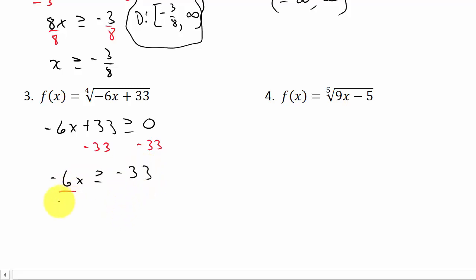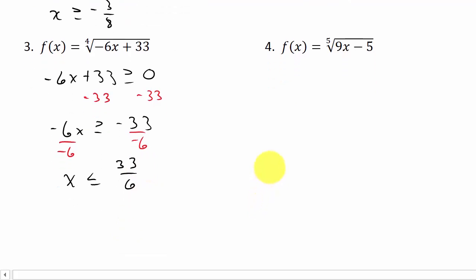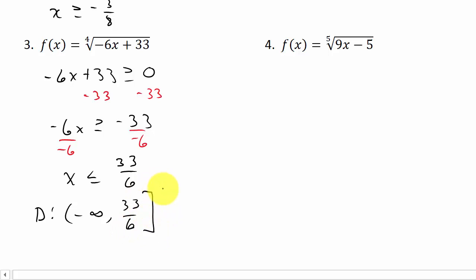Then we divide both sides by negative 6. Remember, whenever you multiply or divide both sides of an inequality by a negative number, you have to reverse the inequality symbol. So our domain is everything less than or equal to 33/6, which means the domain is negative infinity to 33/6. And since 33/6 is included, we put a bracket there.